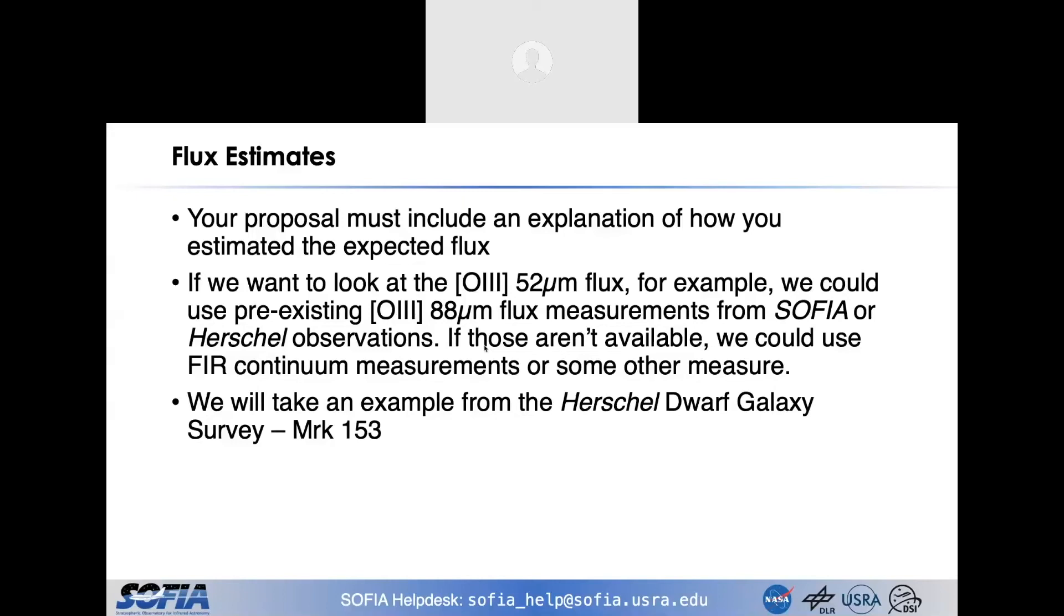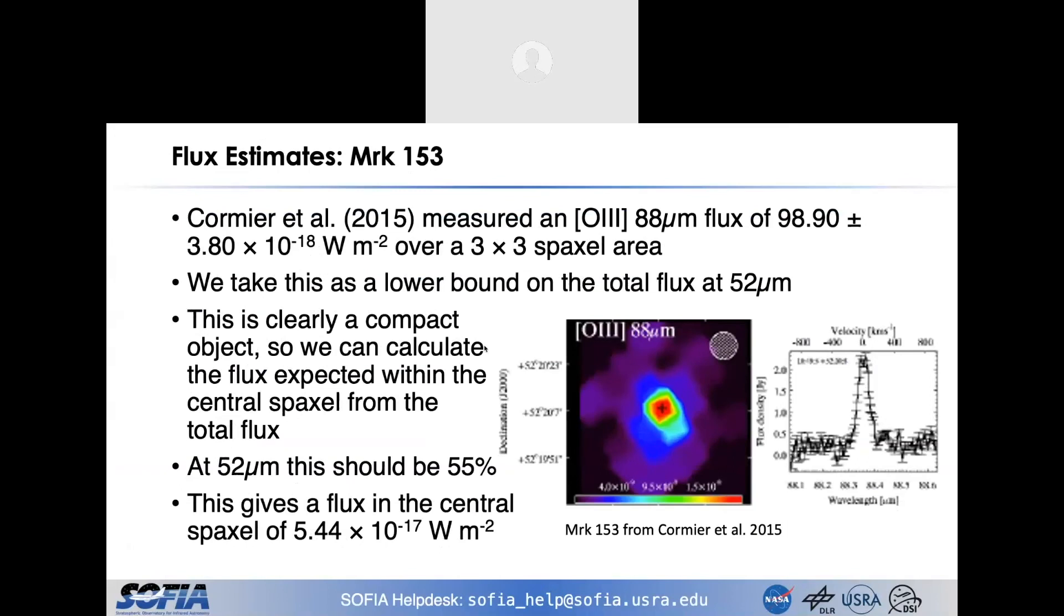So I'm going to take an example here from the Herschel dwarf galaxy survey of Markerian 153. Cormier et al. measured 88 micron flux of 98.9 over a 3 by 3 spaxel area. Spaxel is a spatial pixel. You can see from the map that Cormier et al. published, this is a compact object. And so we can calculate the flux that we expect to see within the central spaxel. At 52 microns, we expect the flux in the central spaxel with FIFI-LS to be about 55%, and so that gives us 5.4 times 10 to the minus 17 watts per meter squared.